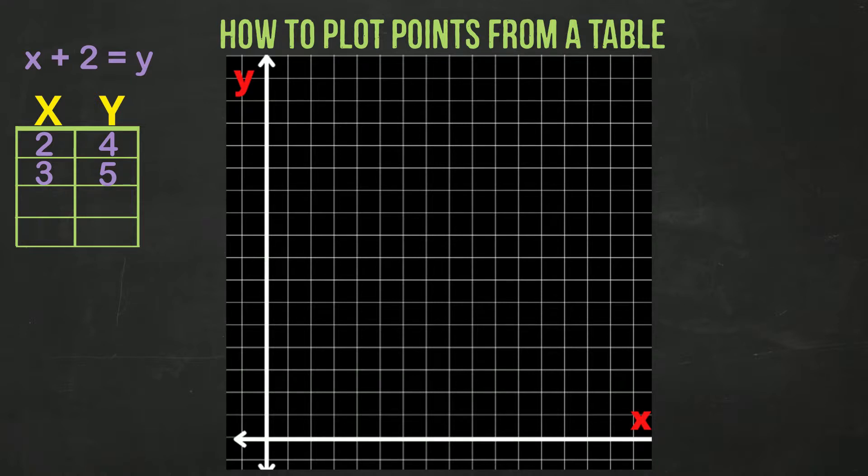Last one. x value is equal to 4. And we know 4 plus 2 equals 6. So y is 6 in our table.